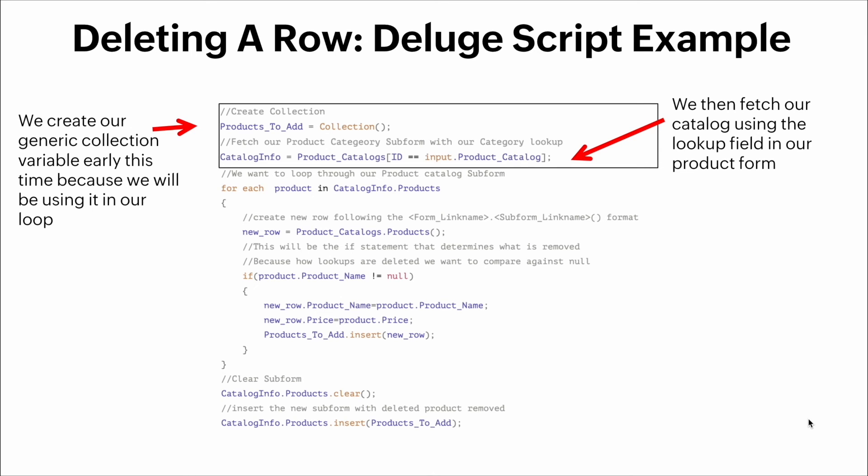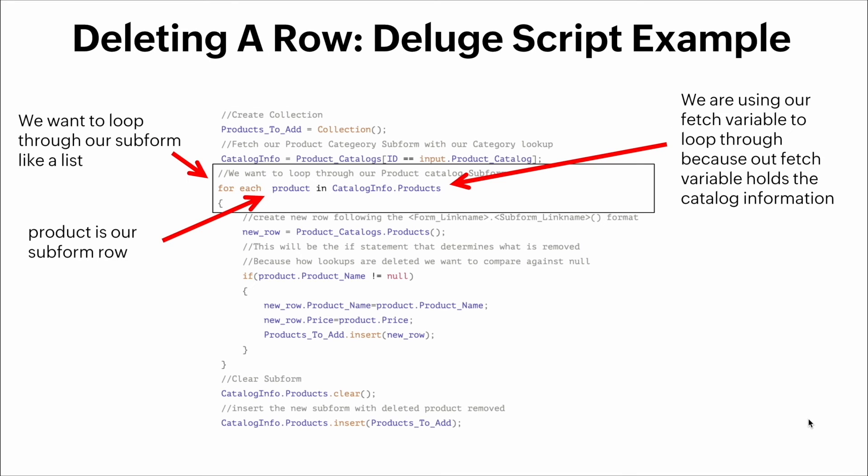We create our generic collection variable early this time because we'll be using it in our loop. We then fetch our catalog using the lookup field in our product form. We're going to loop through our subform like a list.